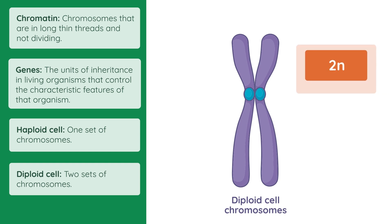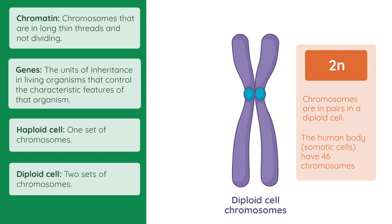A diploid cell has two sets of chromosomes — the chromosomes are in pairs. So in human body or somatic cells, there are 46 chromosomes, and we write this as 2n equals 46.